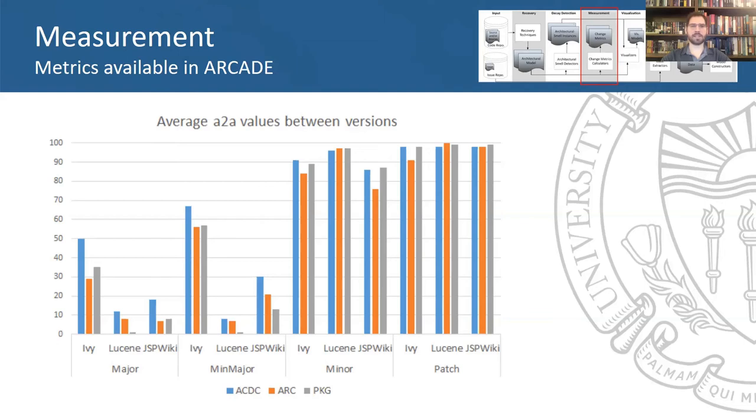A2A is a metric that compares two architectures by using a certain set of fundamental operations versions and identifies how similar the two architectures are. As you can see in the chart,